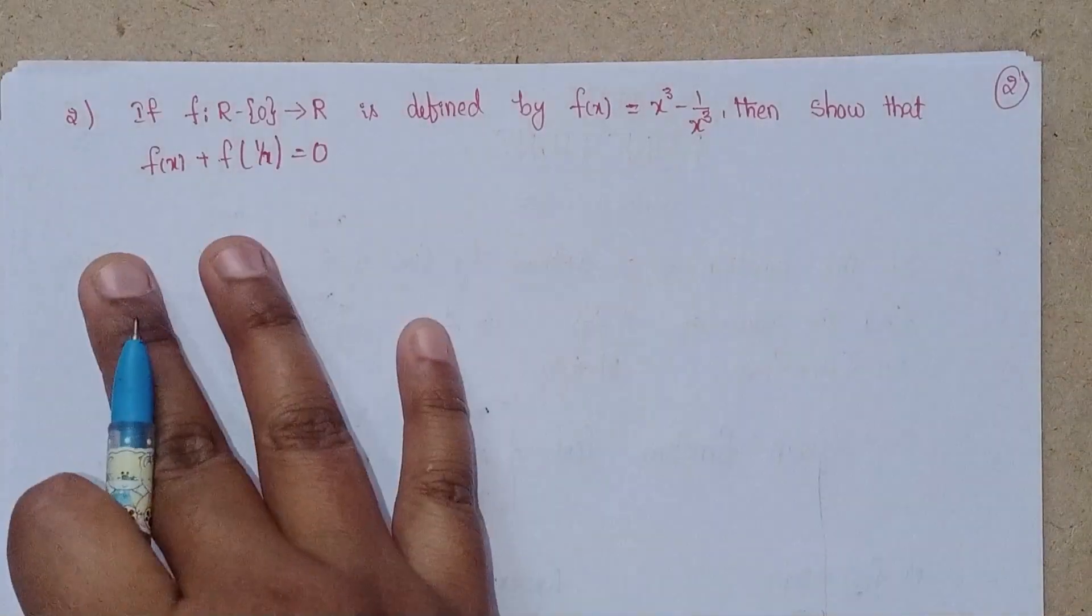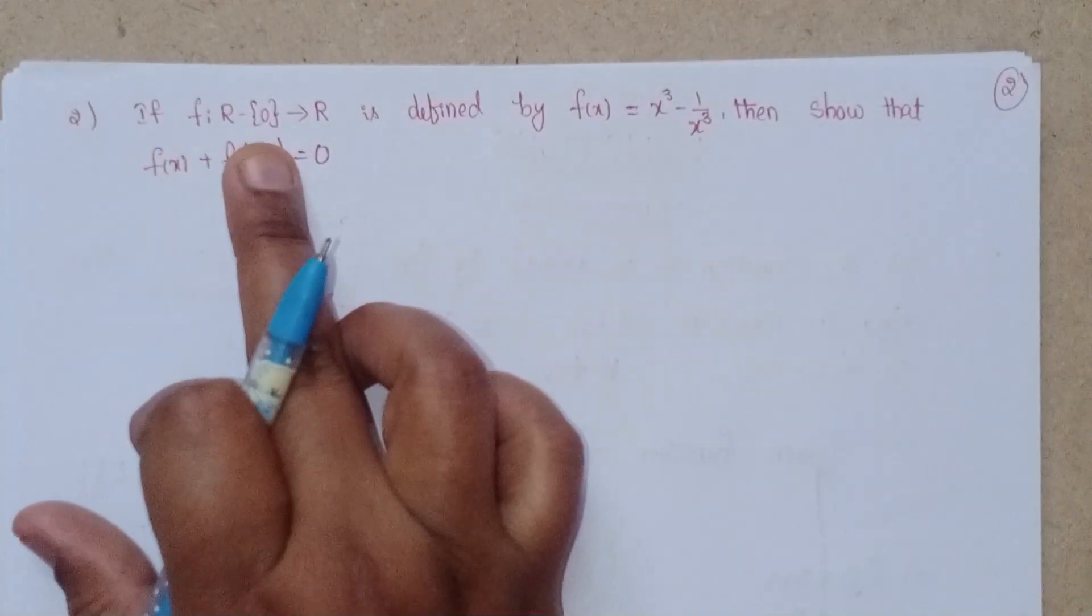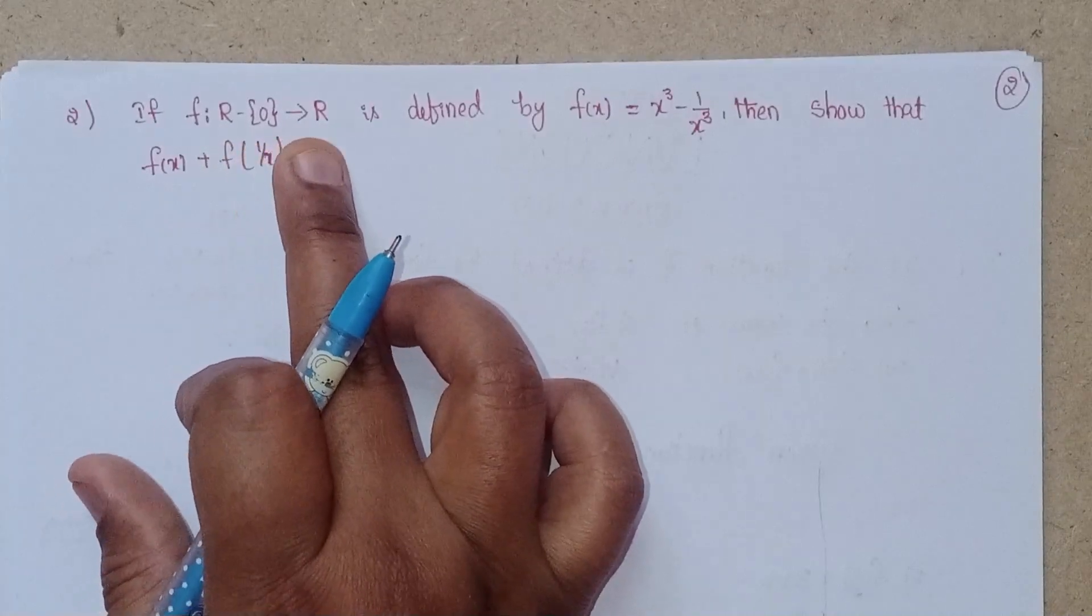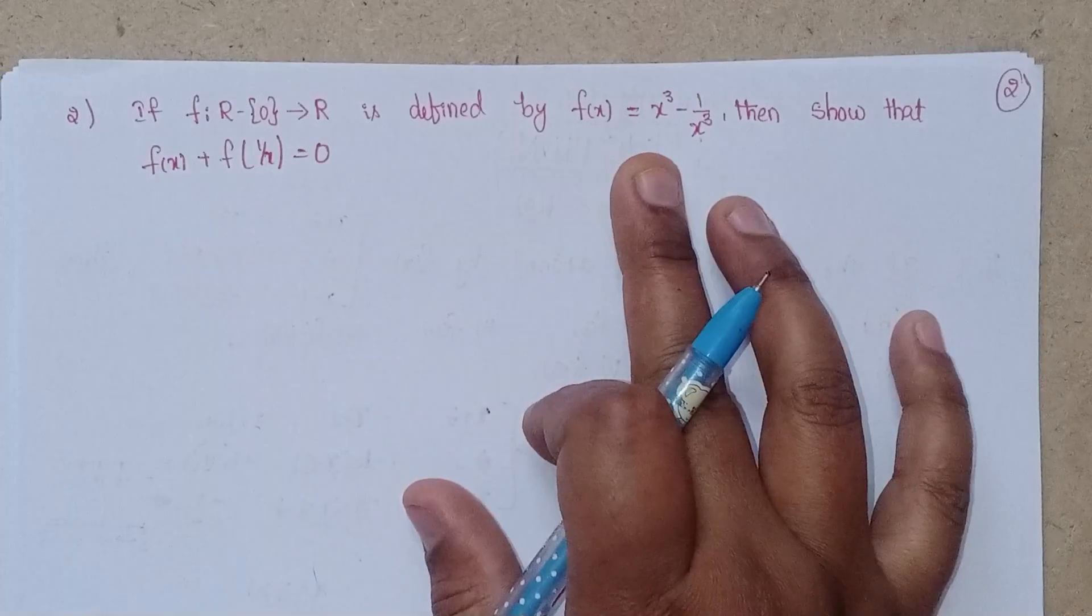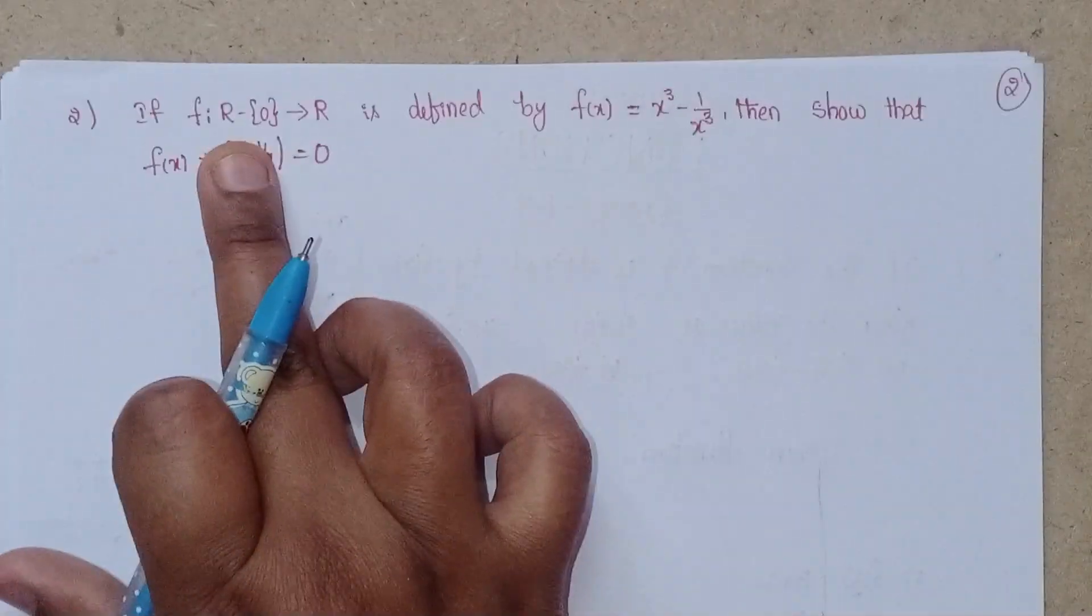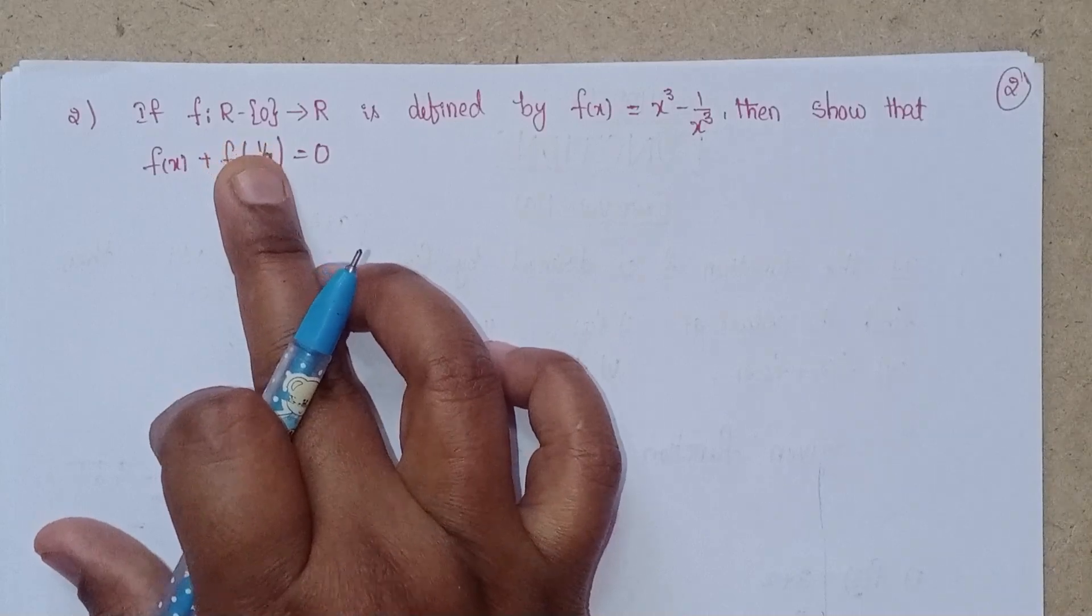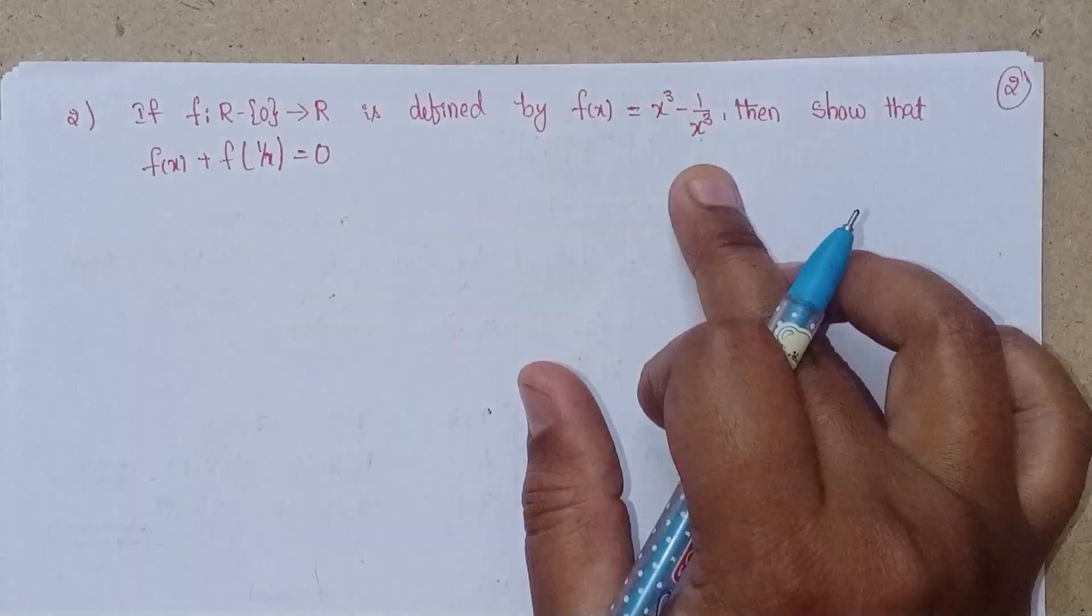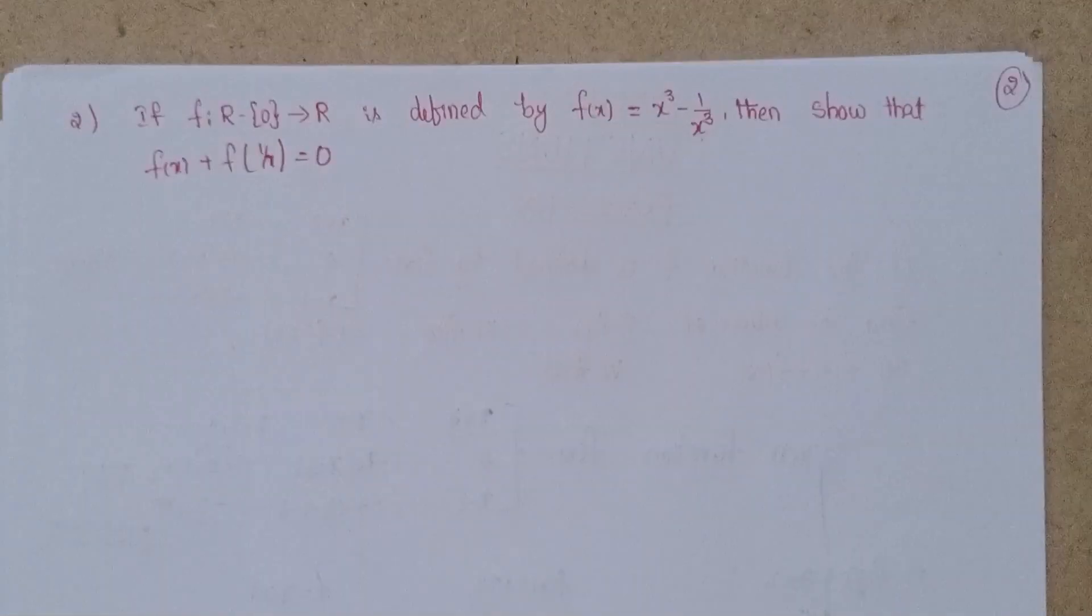First Roman, second problem. The function f is a mapping from R minus 0 to R, defined by f(x) = x³ - 1/x³, where we take real numbers except 0. Then show that we need to prove this.